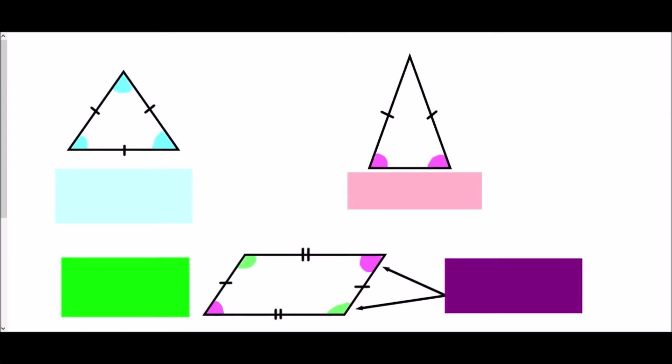Now we'll look at specific types of triangles and quadrilaterals with special angle features. First, the equilateral triangle — shown by the same dash on all three sides, meaning all sides are equal length. All three angles are also equal and since they add up to 180, each must be 60 degrees. The next type is the isosceles triangle, which has two sides the same length.